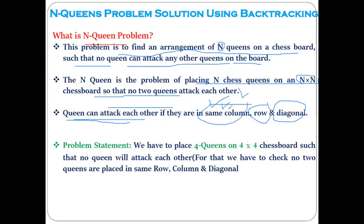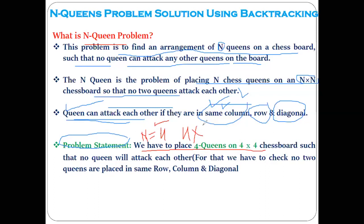If you want to solve the N-queen problem, this constraint must be satisfied — there should not be two queens in the same column, same row, or the same diagonal. If they are in the same column, row, or diagonal, then those queens are considered to be attacking each other. Our main goal is that no queen should attack any other.